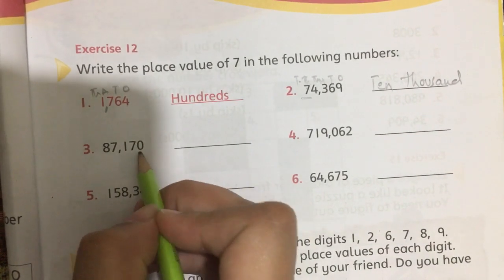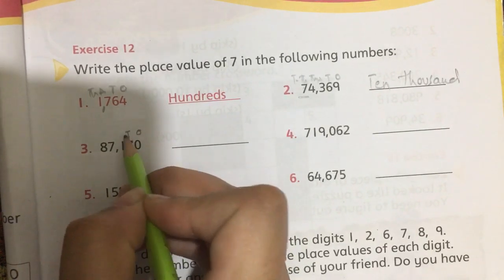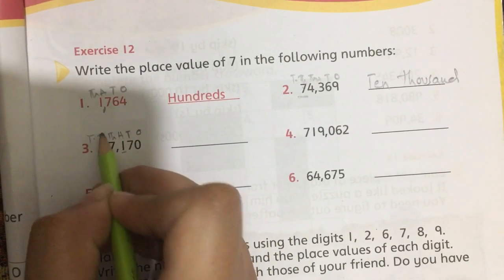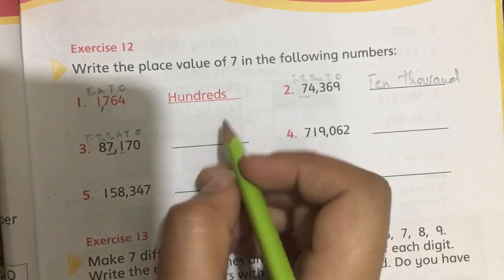Number 3 is 87,170. This is 1, 10, 100, 1000, and then 10,000. So 7 has a place value of 1000.